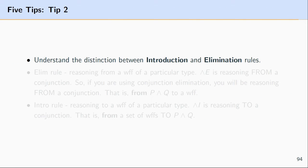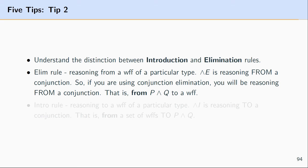The next distinction, if you're working within a natural deduction system, is between introduction rules and elimination rules. Elimination rules are rules where you reason from a formula of a particular type to some other formula. For example, conjunction elimination (∧E) lets you reason from a conjunction to another formula — from P∧Q to P or Q. The same applies to disjunction elimination and conditional elimination.